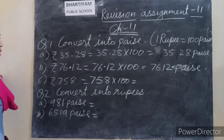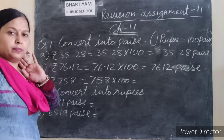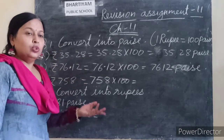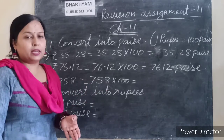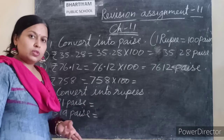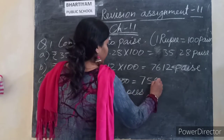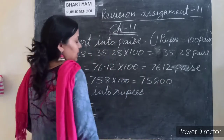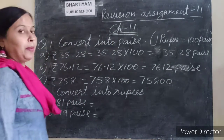This question has no decimal point, so we will add two zeros. How do we convert 758? Simply add two zeros. 758 becomes 75,800 paise.